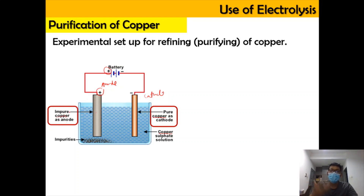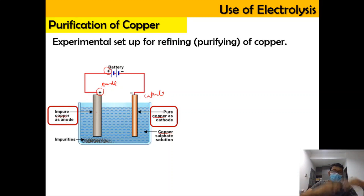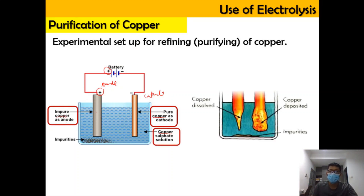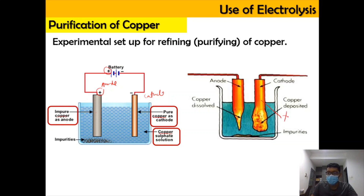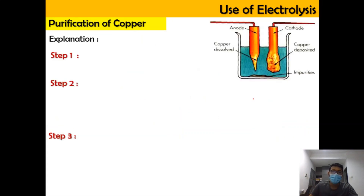Purification basically means that we separate the pure species from the impure ones, with the impurities going down as sludge. By the end of this experiment, you're going to see that the cathode will be filled with pure copper. Meanwhile, some of the impurities will go down, and the copper anode electrode will get thinner and thinner. In order to explain this, you will know that the electrolyte being used is copper sulfate solution.